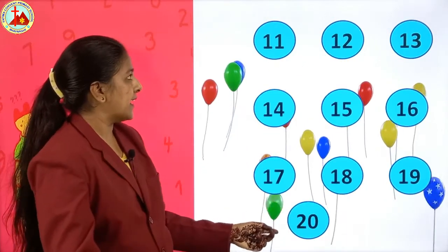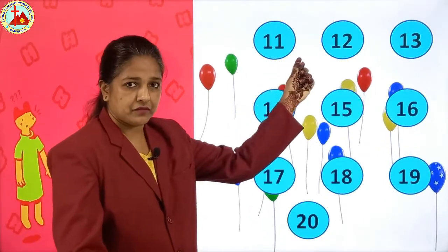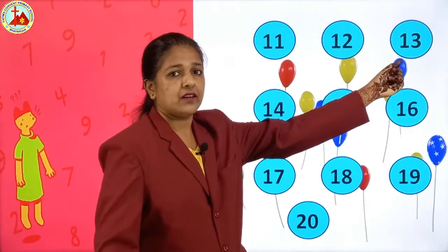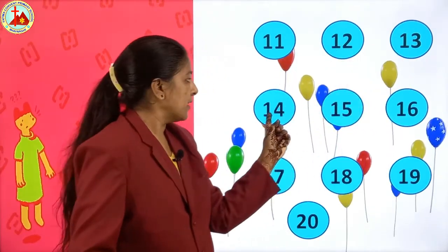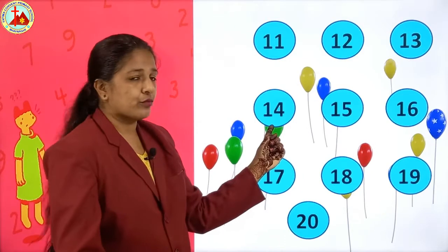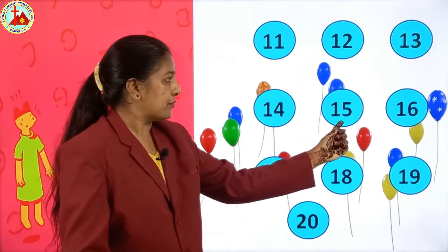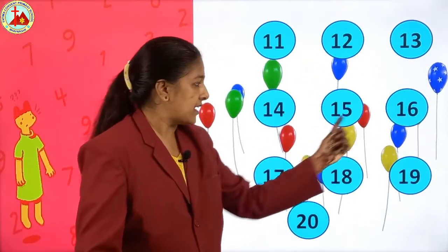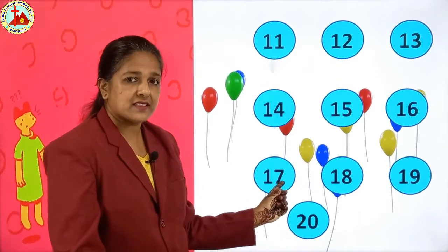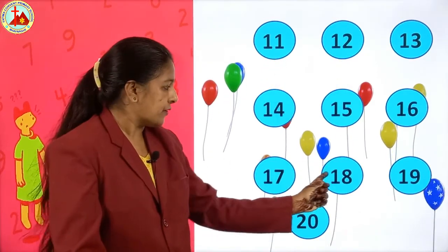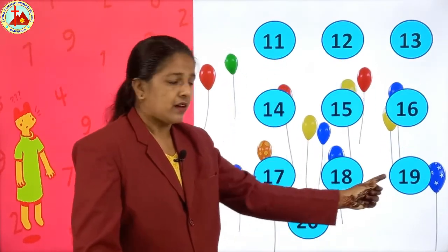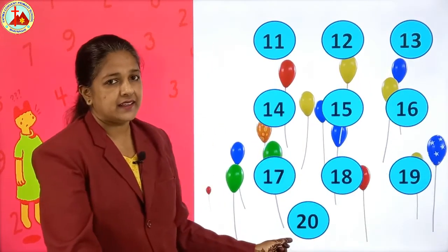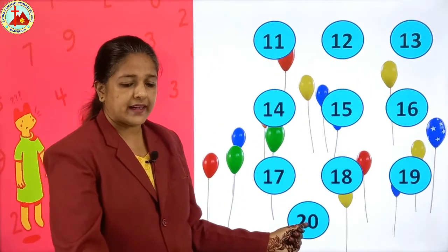After 10: 1-1, 11. 1-2, 12. 1-3, 13. 1-4, 14. 1-5, 15. 1-6, 16. 1-7, 17. 1-8, 18. 1-9, 19. And 2-0, 20.